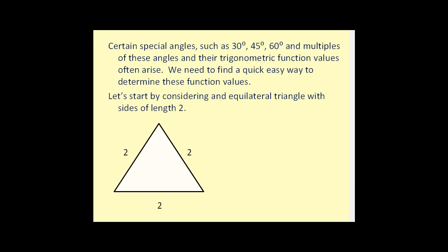So we need to find a quick, easy way to determine these function values. Let's start by considering an equilateral triangle with sides of length two. We know that if this is an equilateral triangle, then all the angles are congruent — therefore all the angles must be equal to 60 degrees. Now if we were to bisect this angle, or form the perpendicular with the opposite side, we would have two right triangles, and each triangle would have a 90 degree angle, a 60 degree angle, and a 30 degree angle.